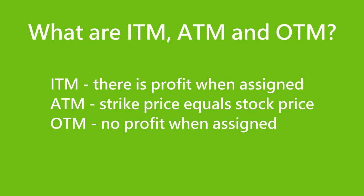What are ITM, ATM, and OTM? ITM means in the money — that's when the relative prices of the stock and the strike show a profit if assigned. ATM is at the money; it's when the market price equals the strike price. OTM, out of the money, is when the relative prices of the stock and the strike show no profit to an assignment.